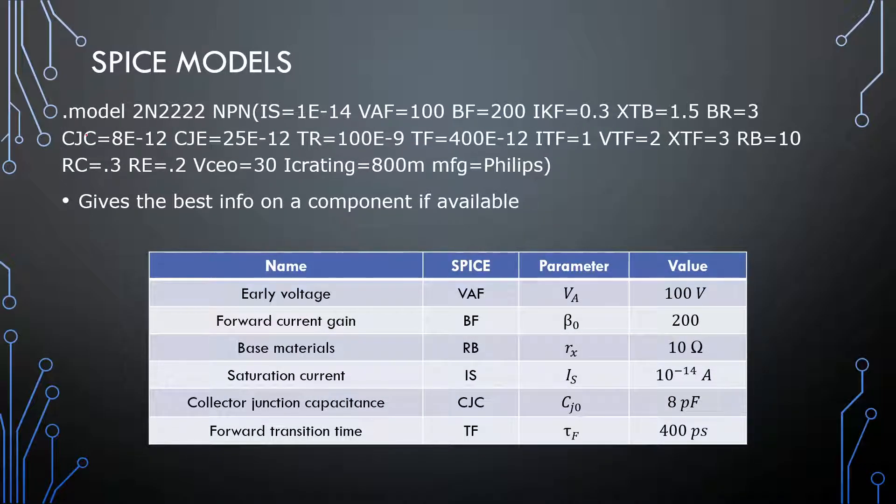We can get the early voltage from the SPICE model. You can get SPICE models online or, if you're lucky, or using something like Altispice. The SPICE model is actually there when you do your component selections. VAF is your early voltage. BF is your forward current gain or your beta value. And, there's a lot of stuff that we won't be interested in at this point. CJC is that collector junction capacitance. Well, it's not exactly the same, but you'll find that this one from the data sheet and from the SPICE model is typically the same.